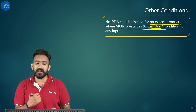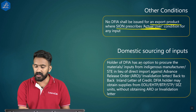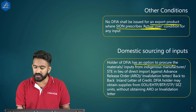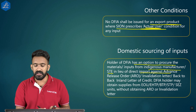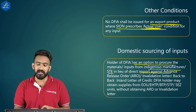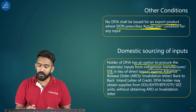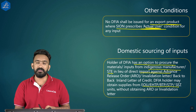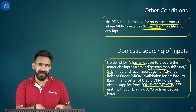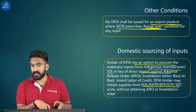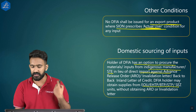Can inputs be sourced domestically? Yes — the holder of DFIA has the option to procure materials or inputs from a domestic manufacturer or Star Trading Enterprise (STE) in lieu of direct imports, but this requires use of an Advance Release Order (ARO) or an invalidation letter or a back-to-back letter of credit. Inputs may also be obtained from EOU, EHTP, BTP, FTWZ, STP, or SEZ units. This condition mirrors that under the Advanced Authorization scheme.